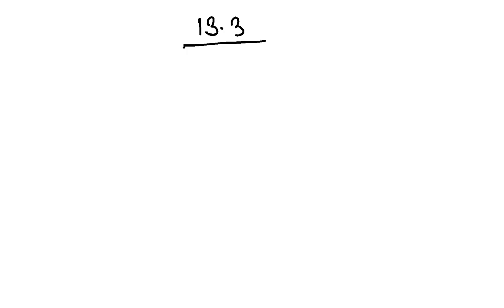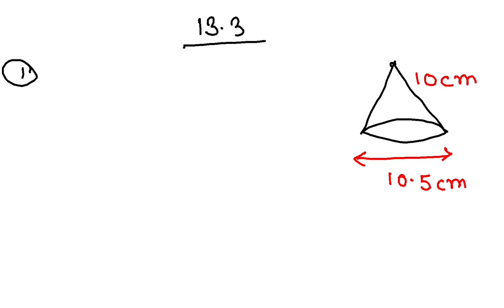Question number one: There is a cone with base diameter 10.5 centimeters. This is your cone and the diameter is 10.5 cm, and the slant height of the cone, that means this length over here, is 10 centimeters. I have to find CSA and TSA of the cone.